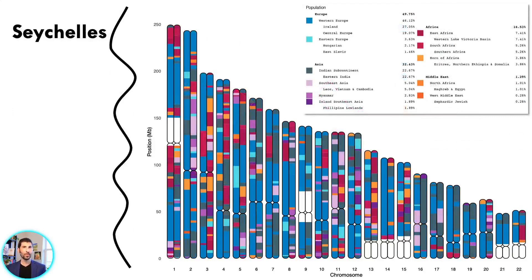Some people are just highly mixed from all sorts of continents. This person is from the Seychelles and they have ancestry from Europe, from Asia — including Southeast Asia and Island Southeast Asia — from Africa, which is close to the Seychelles, and from the Middle East. So this is just a nice palette of different colors from around the world.